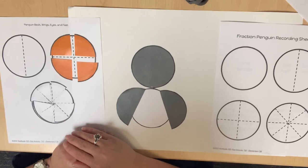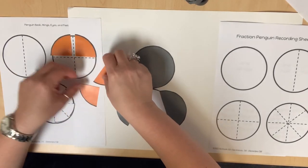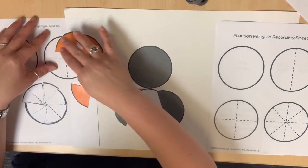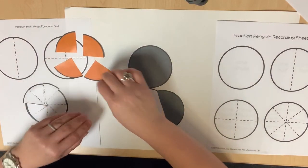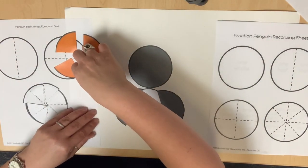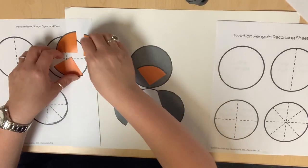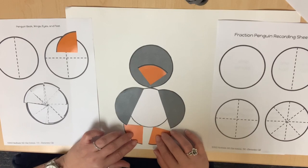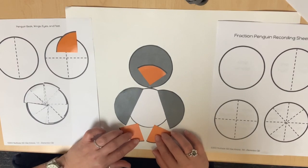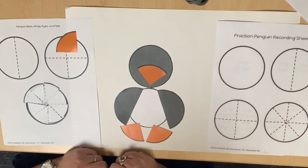Have students cut the circle along the dotted lines. How many equal parts do you have now? There are four. How can we name each part? Each part is one fourth because there are four total pieces in the whole circle. Three of the one fourths should be glued to represent the feet and the beak.